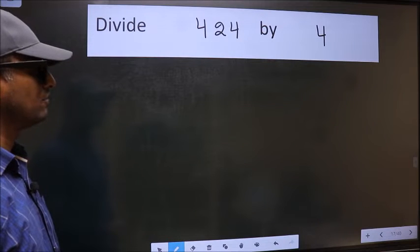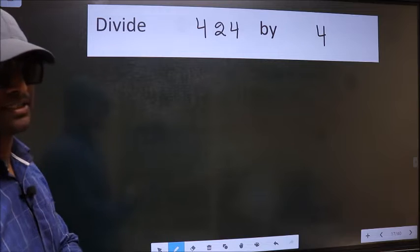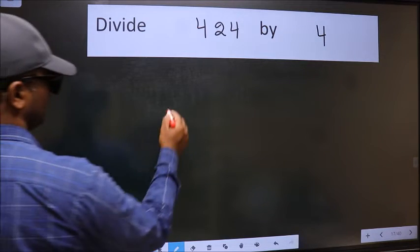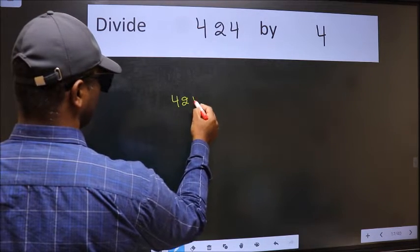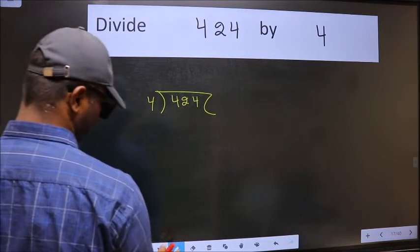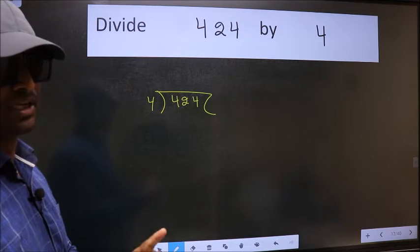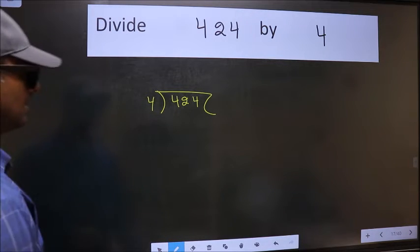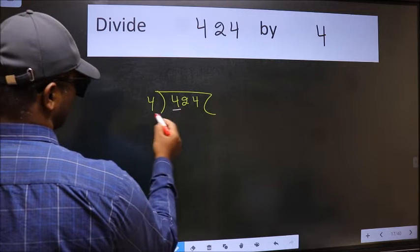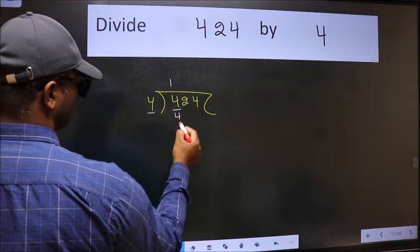To divide 424 by 4, we frame it in this way: 424 here and 4 here. This is step 1. Next, here we have 4, here also 4. When do we get 4 in the 4 table? 4 once is 4.